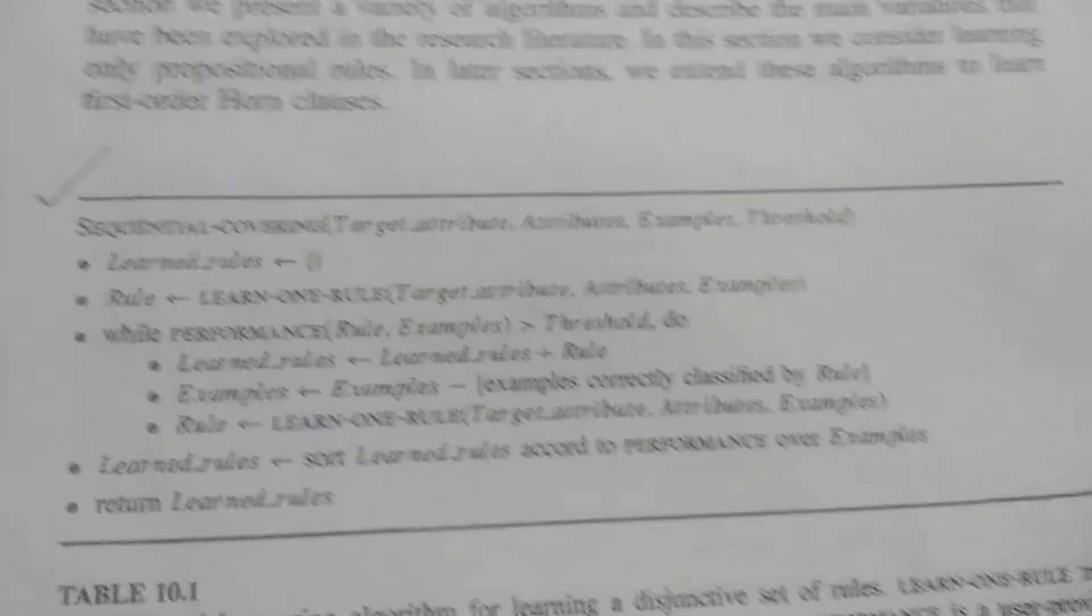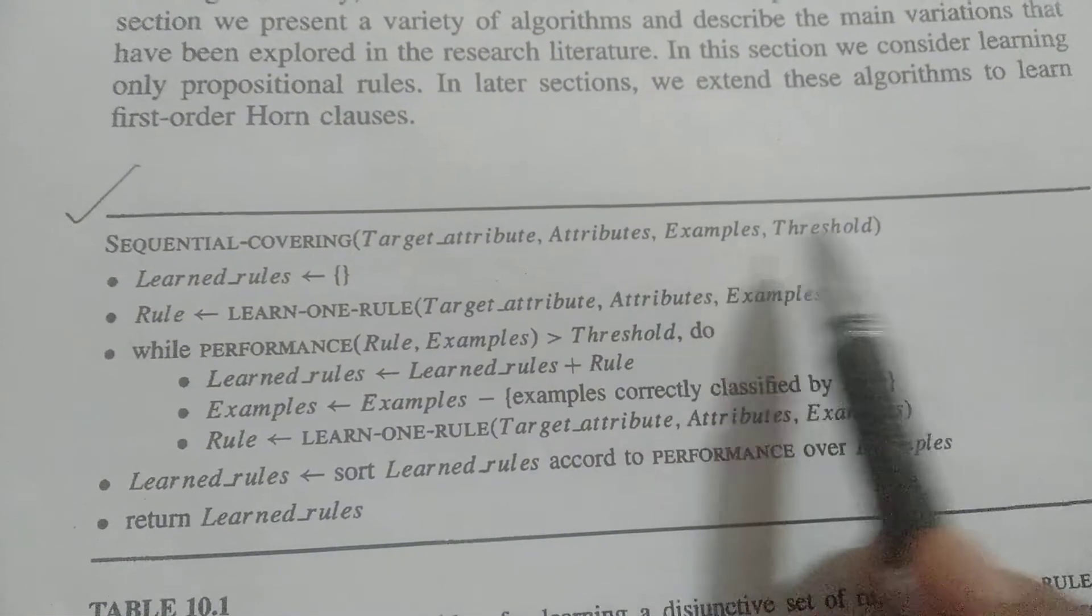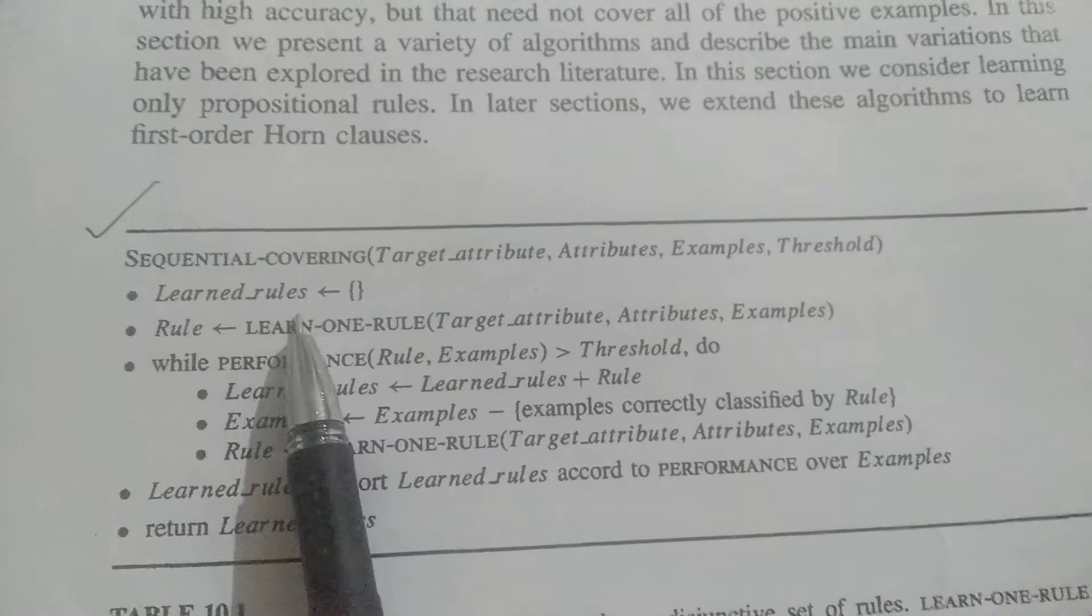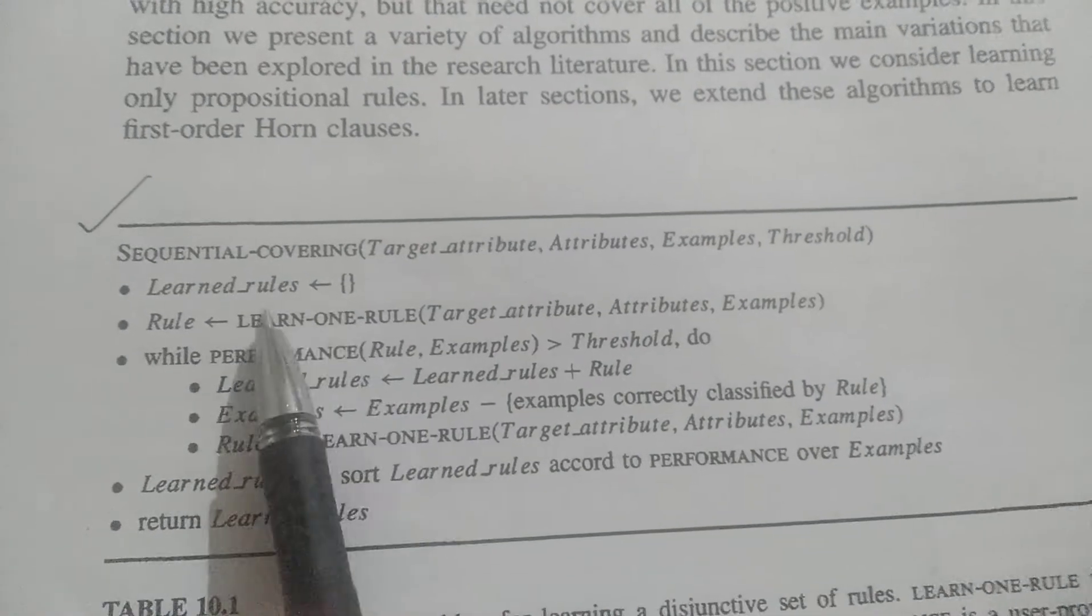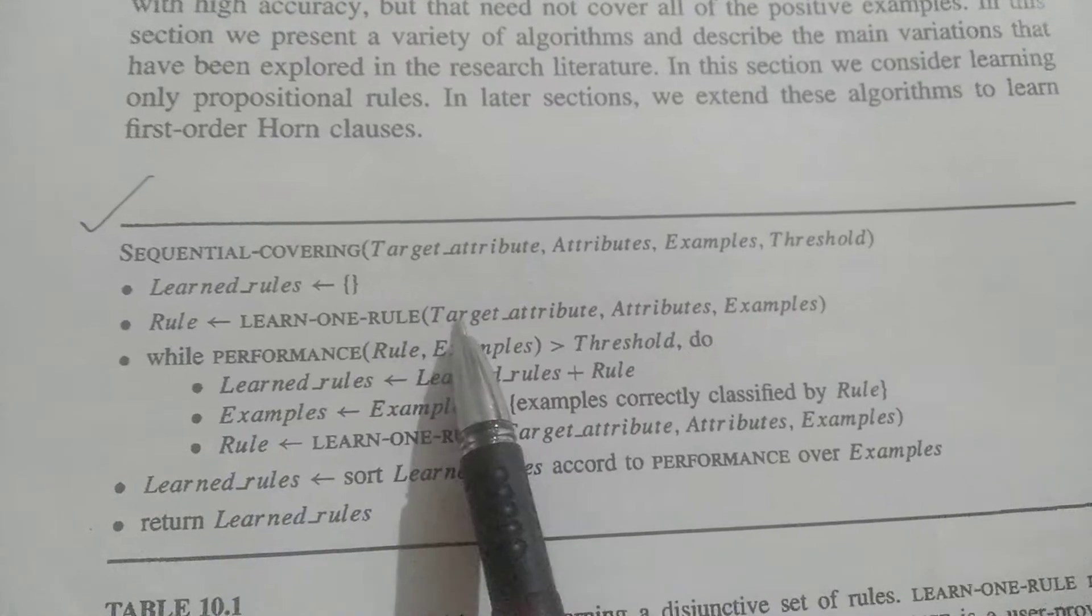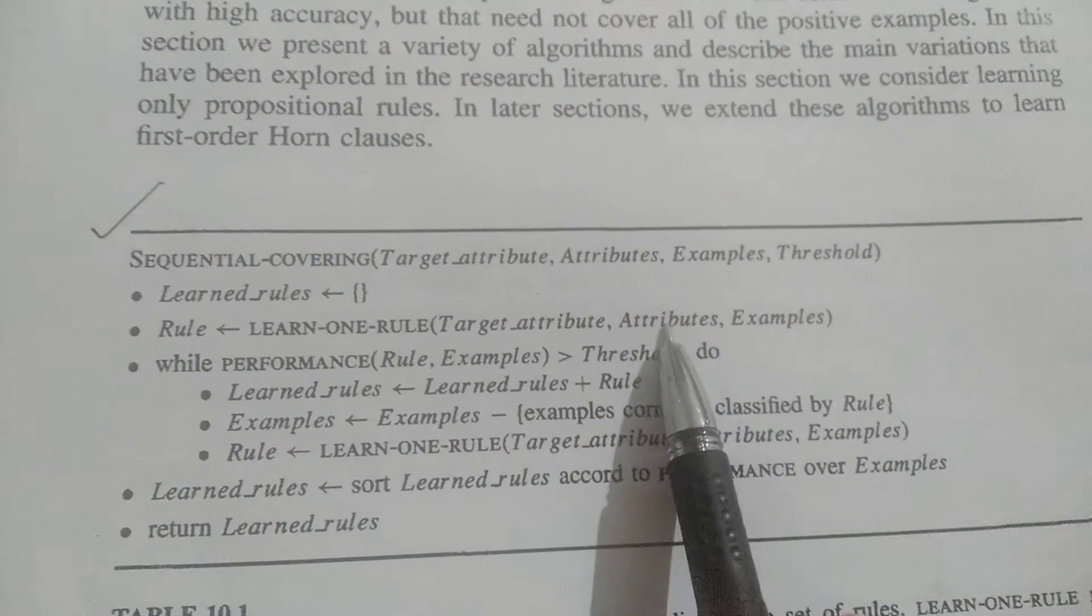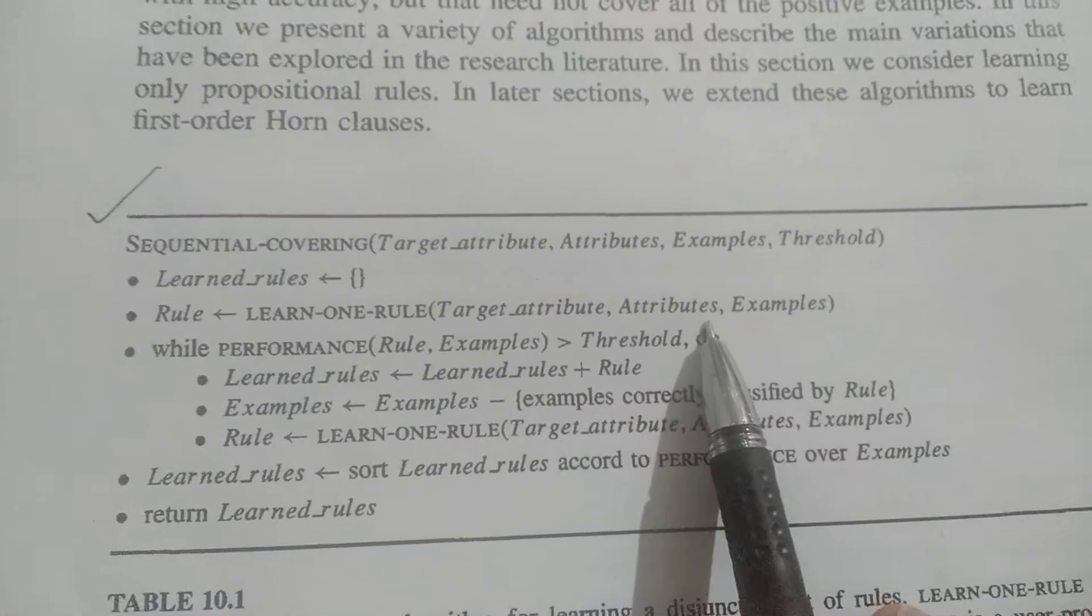This is the algorithm: Sequential covering takes target attribute, attributes, examples, and threshold as inputs. Initially, learned rules is an empty set. First, we learn one rule by considering the target attribute, attributes, and some examples. We need not consider all examples, just a few.